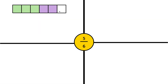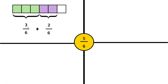We notice that we have 5 out of 6, or 5/6. One way to decompose 5/6 is to take 3/6 and add 2/6. 3 plus 2 equals 5, and we have 6 equal parts, so that will equal 5/6.